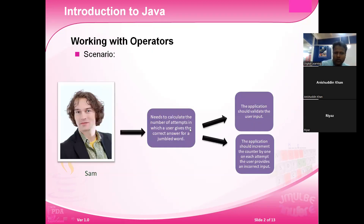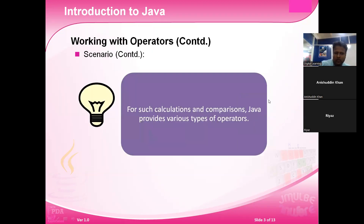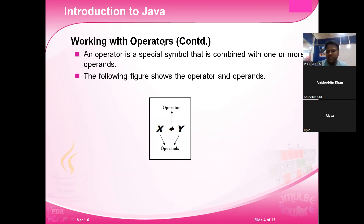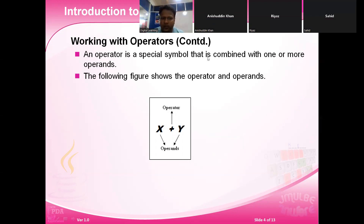An operator is a special symbol that is combined with two or more operands. It is a special symbol which is used to combine with one or more operands. For example, in x plus y, x and y are called operands, and plus is called the operator.